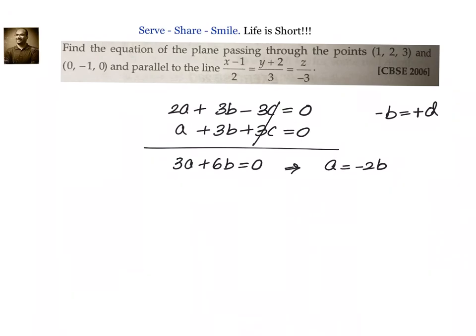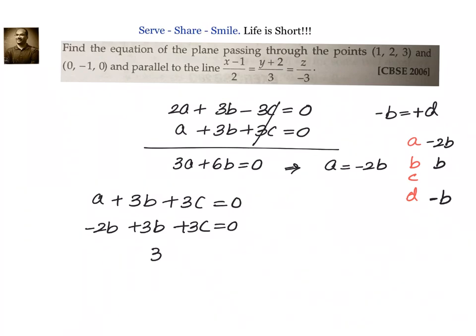Now, let us write down how we want to write all the variables a, b, c, d in terms of b. b will be b only. We got a = -2b. We know d = -b. Only we have to find out what is c. For that, let us go to the condition a + 3b + 3c = 0. a we know is -2b, so -2b + 3b + 3c = 0, or 3c = -b, or c = -b/3.